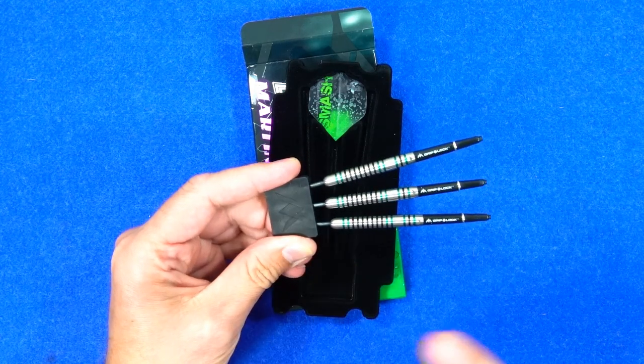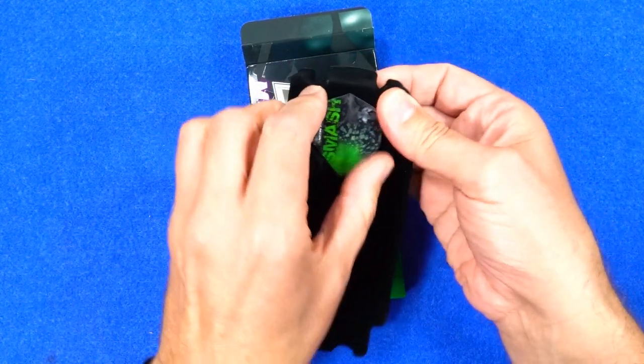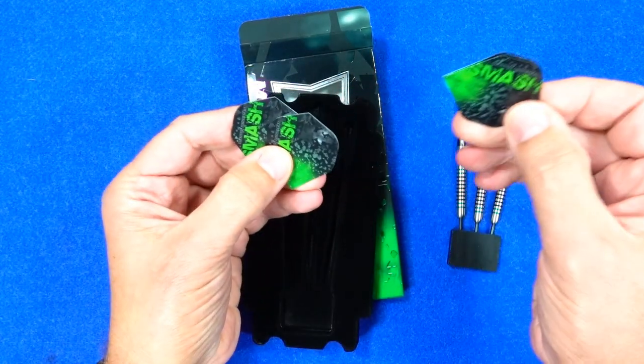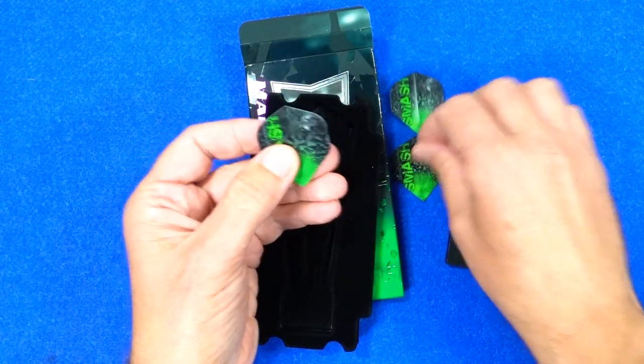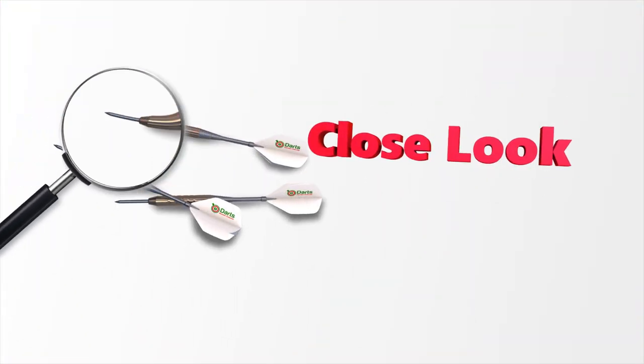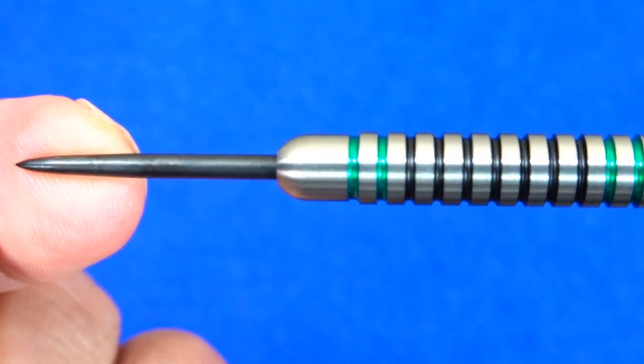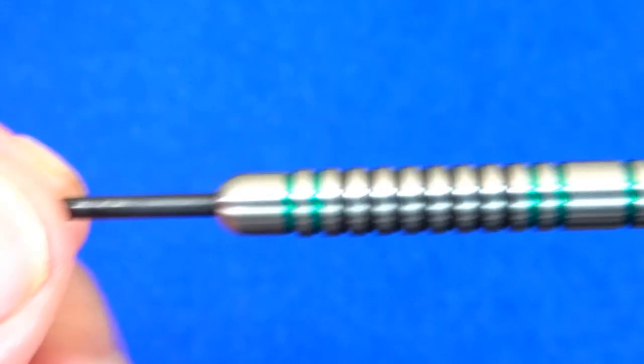Inside there's a plastic tray with a velvety covering holding the darts in place. You've got your Mission point holder. They come with these short Grip Lock stems and these Smash standard shape Martin Lukeman flights.